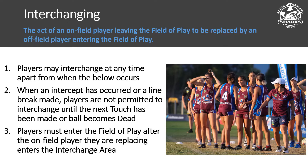However, when an intercept occurs or a line break is made, players are not permitted to interchange until the next touch has been made or the ball becomes dead — so a touch is made, they run out, they drop the ball, or they score a try. Any of those instances mean interchanges can then occur.